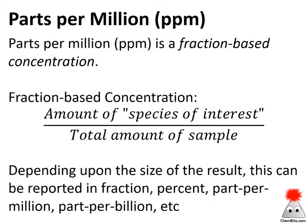Parts per million is part of a family of fraction-based concentration units. When I say fraction-based, I mean the amount of the species we're interested in divided by the total amount of sample. That can have a lot of different actual units to it. Today we're talking about parts per million, but that looks like a percent — if it's the right size fraction, then percent is probably the best way to express it. Or if it's very small, part per billion or even part per trillion can work better.